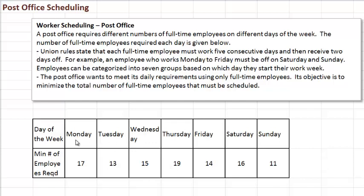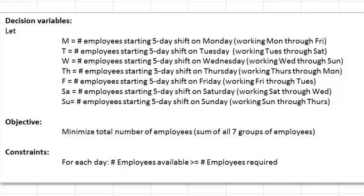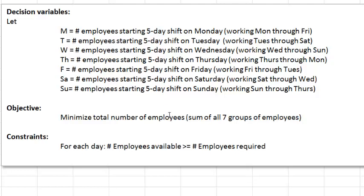For each day of the week, you could have a group of employees starting their shift that day. So it comes down to deciding how many people to assign for each 5-day shift. We define the decision variables after the days of the week: M represents the number of employees starting a 5-day shift on Monday — working Monday through Friday, with Saturday and Sunday off. T would be the people working Tuesday through Saturday. W would be people working Wednesday to Sunday, and so forth. The objective is to minimize the total: M + T + W + TH + F + SA + SU.